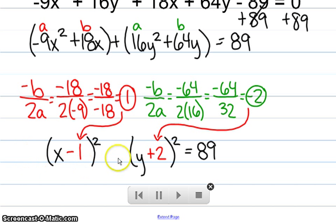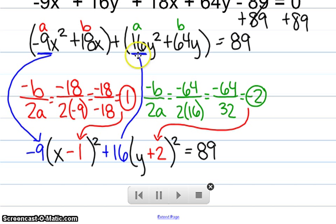Now, we've got to figure out what to do with all these things in the front. Our coefficients are going to come down in front of the set of parentheses that it's talking about. Negative 9 was with x squared, so it goes in front of here. 16 was with y squared, so it goes in front of the y term.